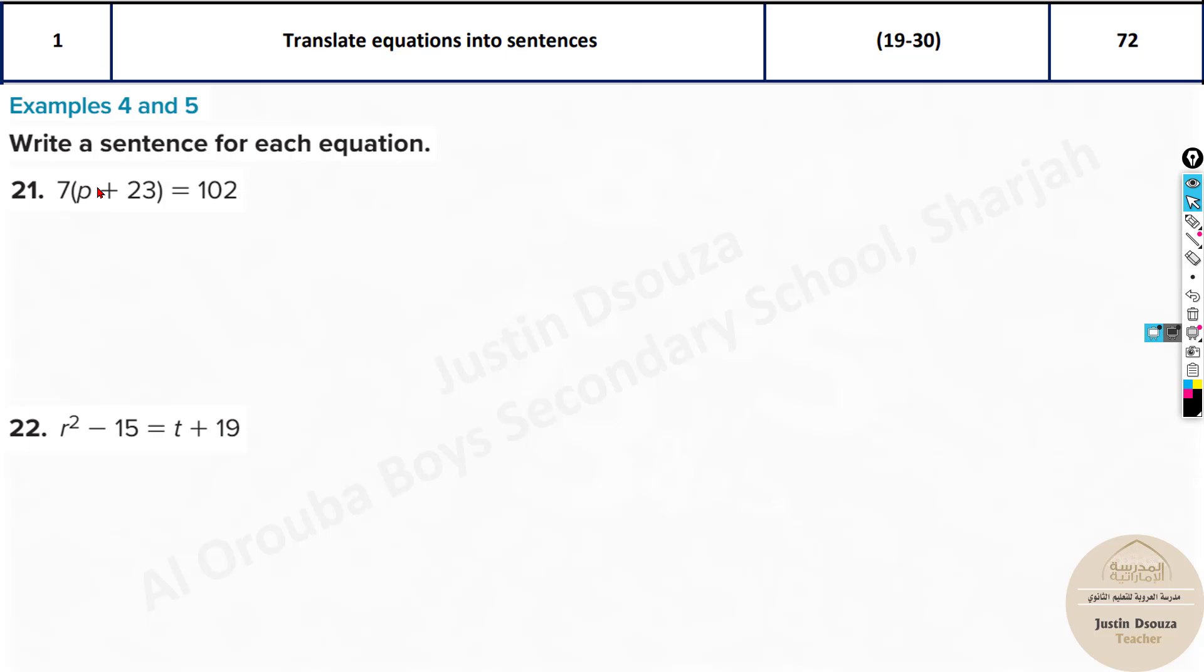Now we can look over here. There is the product of seven. Now whenever there are brackets, you can sometimes see the quantity. It doesn't require all the time. The quantity of p plus 23 times seven, or seven times the quantity of p plus 23, is equal to 102. Let's just check over here.